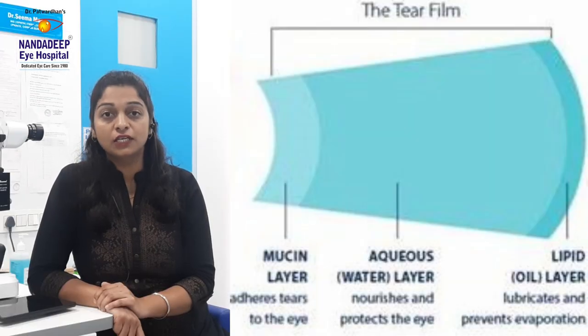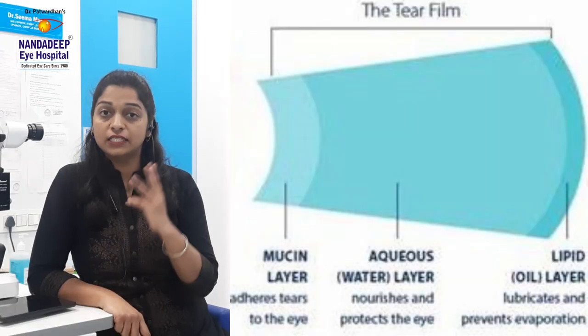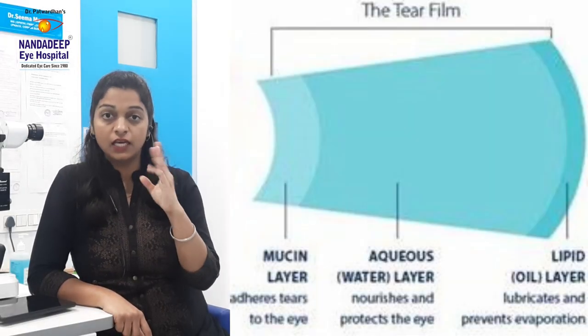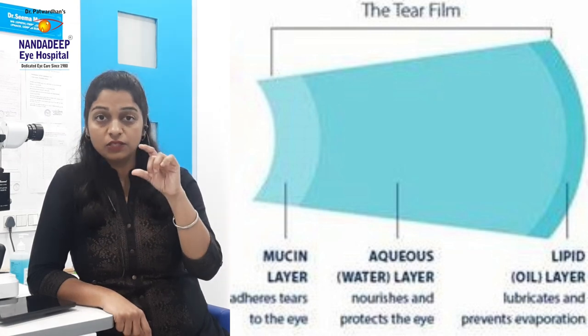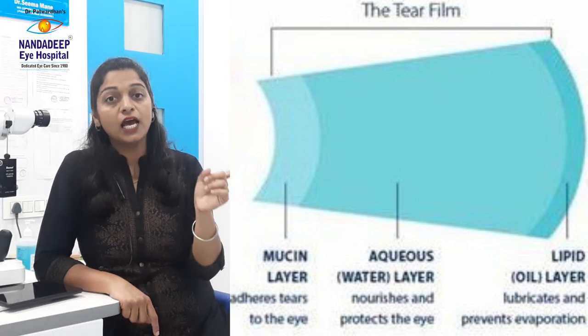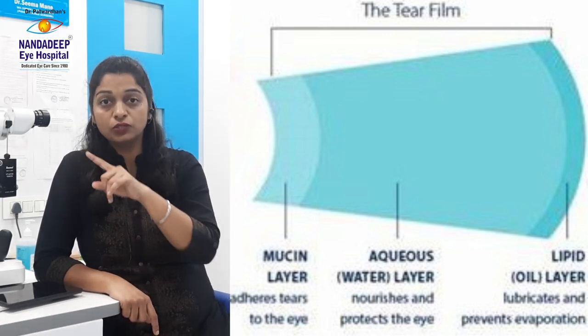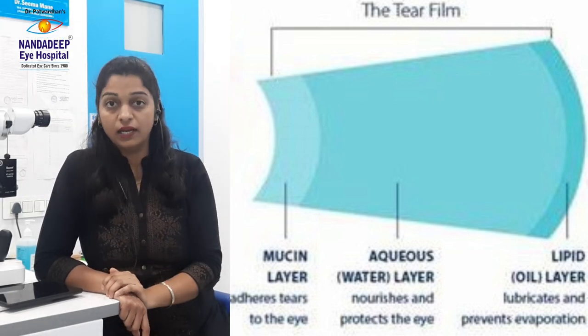Let's understand your tears. Tears have three layers: the basal layer, the intermediate layer, and the outermost oil layer.